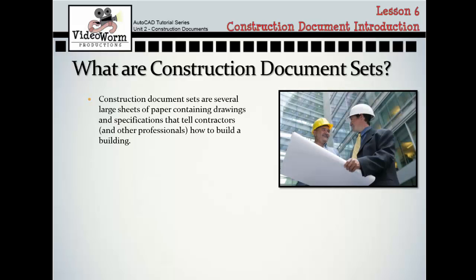Construction document sets are several large sheets of paper containing drawings and specifications that tell contractors how to build a building. Drawings consist of things like floor plans and elevations, and specifications are written instructions telling a contractor about the quality and types of materials they should be using in order to construct the building.